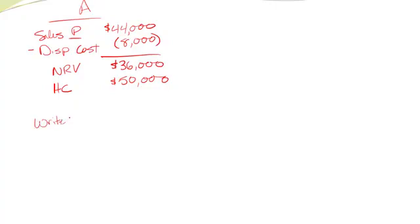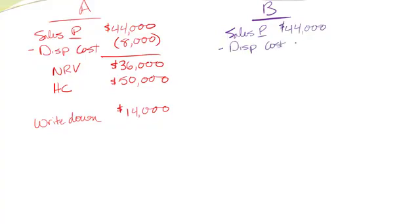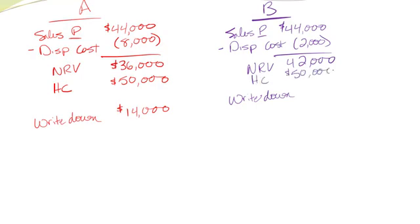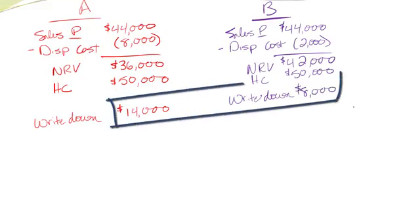Option B was a little bit different. Sales price stayed the same, still $44,000. But if our disposal cost is not as high, this time only $2,000, it changes our net realizable value to $42,000. Still need a write down. But it isn't as significant. Historical cost still $50,000. Oh, I need a dollar sign up here. There we go. So now I only need an $8,000 adjustment.